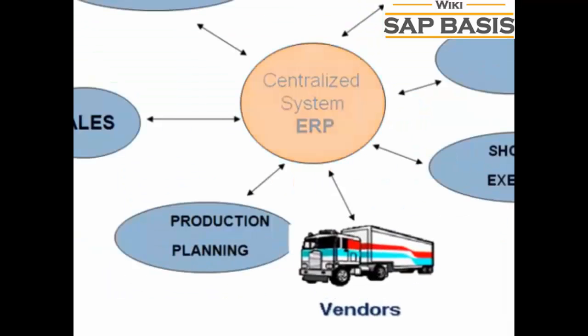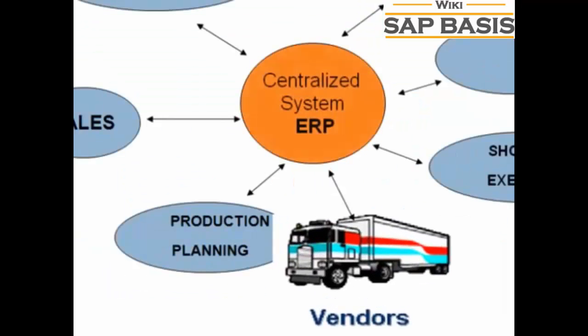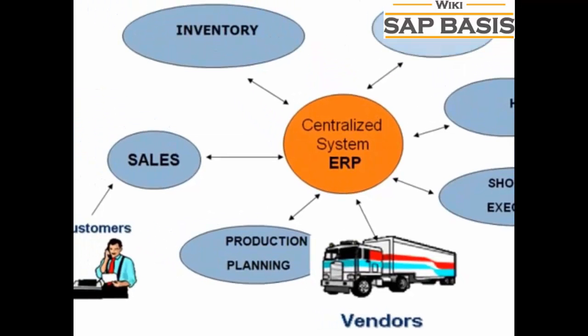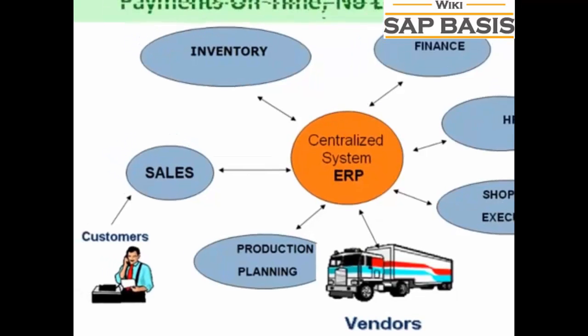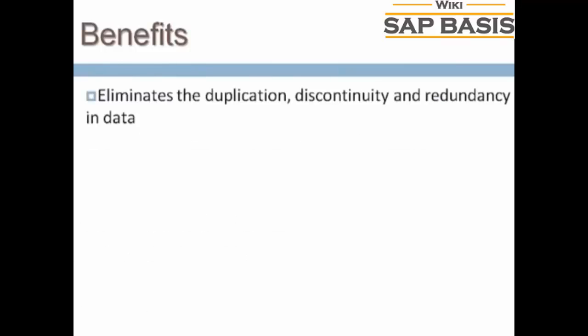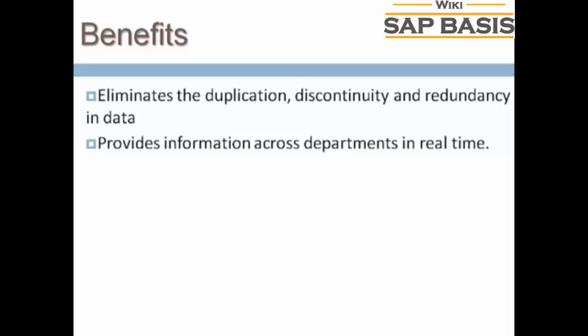Vendors can directly submit their invoices to the centralized enterprise system, which can be accessed by the finance department. Thus, payments are made on time and possible legal actions are avoided. The key benefits of the centralized system are: it eliminates the duplication, discontinuity, and redundancy in data, and it provides information across departments in real time.